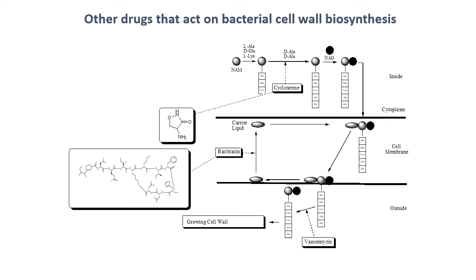Briefly, you should be aware there are other drugs which act on bacterial cell wall synthesis besides the beta-lactams. Vancomycin, already discussed, is involved at the outer cell membrane and inhibits the transposition of the transfer peptides along the chain. Cycloserine also acts on the cytoplasmic side of the membrane. Bacitracin also affects the transfer of lipids through the cell membrane. Just be aware that it's not only beta-lactams, but other drugs as well, that can have this cell wall synthesis inhibition effect.